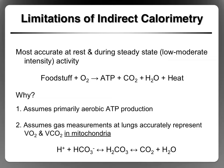We've talked about indirect calorimetry and how it can be a tool to estimate caloric expenditure. Now we're going to say a bit more about the limitations of using indirect calorimetry. As mentioned in the last recording, indirect calorimetry is most accurate at rest and during steady state exercise — a low to moderate intensity that somebody can maintain for an extended period of time. It's most accurate under these conditions because it depends on all of the linear relationships in this formula.